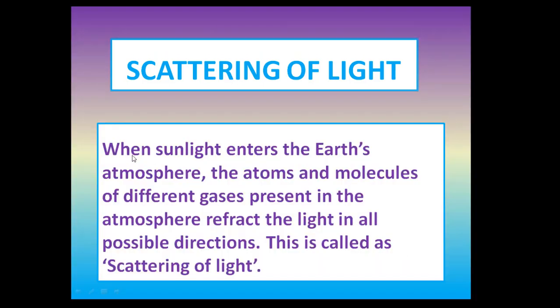See the definition: when sunlight enters the earth's atmosphere, the atoms and molecules of different gases present in the atmosphere refract the light in all possible directions, and this is called scattering of light.